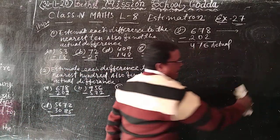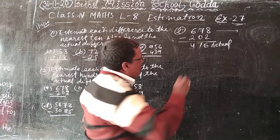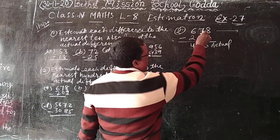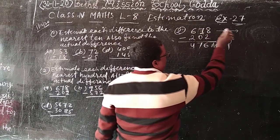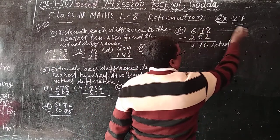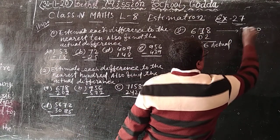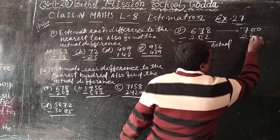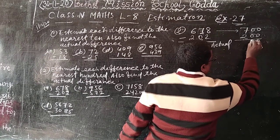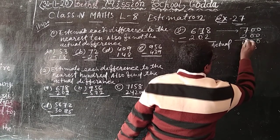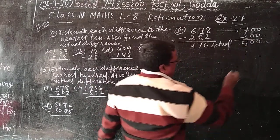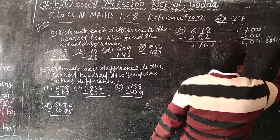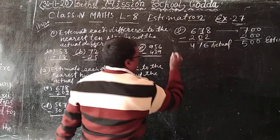Nearest 100. 7 is more than 5, and what I write? 6 plus 1, 700. And here 0, so here I write 200. 700 minus 200, 500. This is estimate.